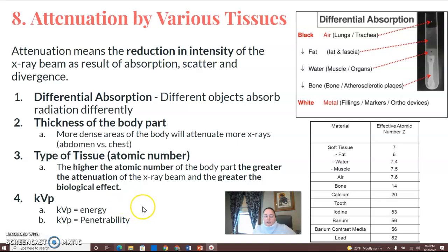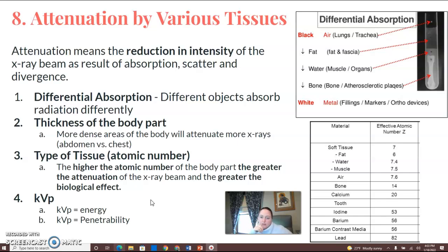And then KVP — your KVP is the energy of your beam, and it also determines the penetrability or penetrating power of your beam. For barium work, we increase our KVP to at least the 110 level for most areas, because we need a higher KVP to work with the barium that's in the patient.